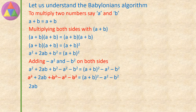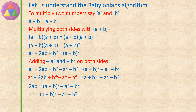So 2AB equals A plus B whole square, minus A square, minus B square. Therefore AB equals A plus B whole square, minus A square, minus B square, divided by 2 — which is the Babylonian's algorithm.